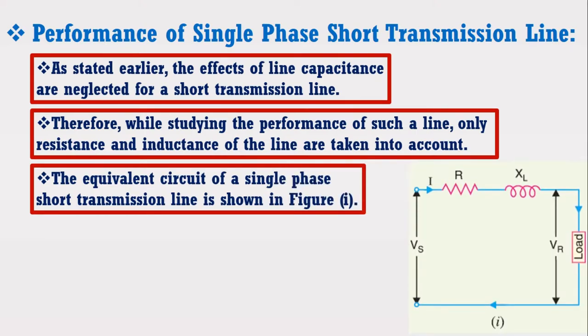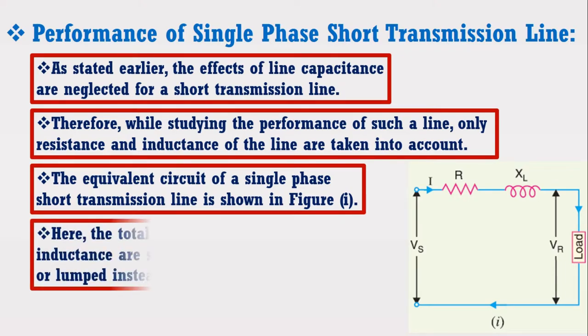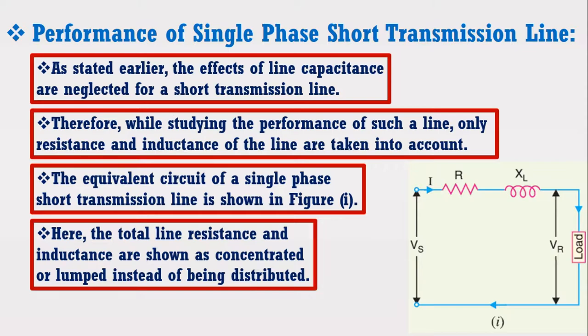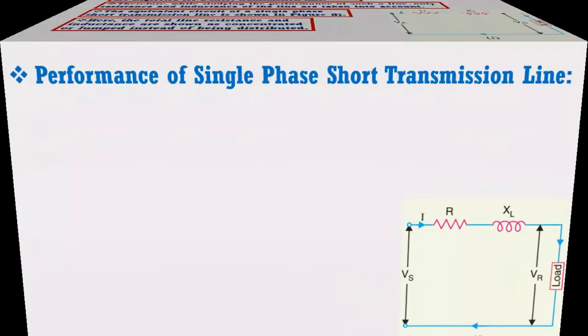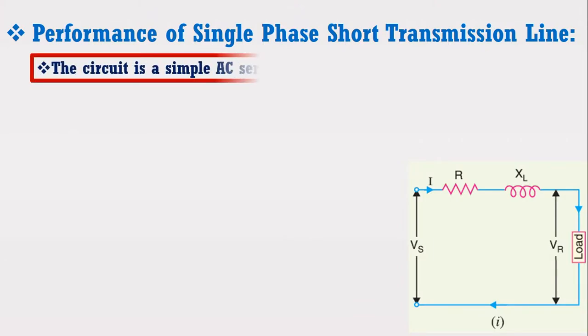The equivalent circuit of a single phase short transmission line is shown in figure 1. Here, the total line resistance and inductance are shown as concentrated or lumped instead of being distributed. It may be noted that this circuit is a simple AC series circuit.